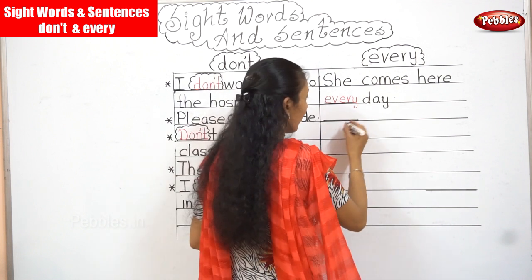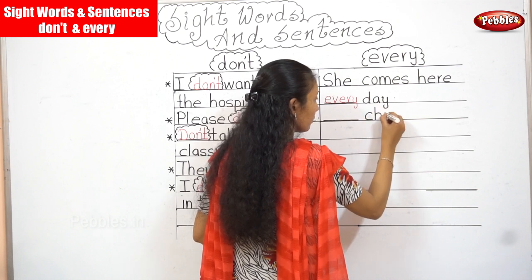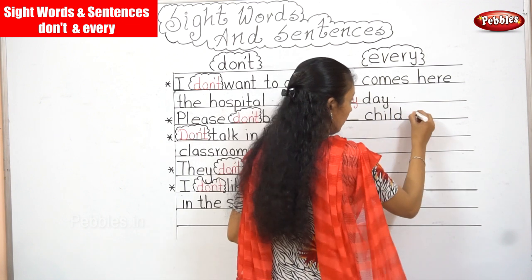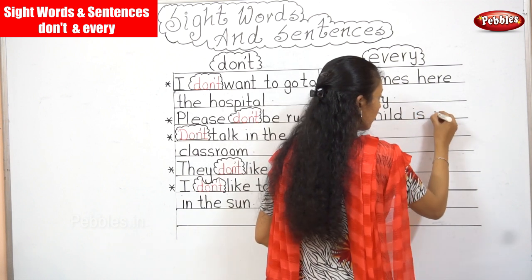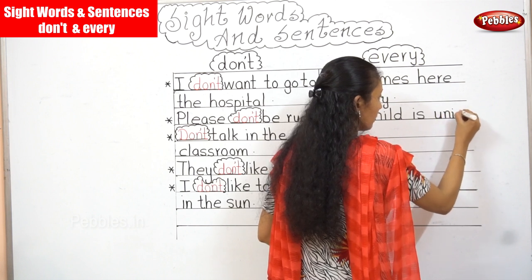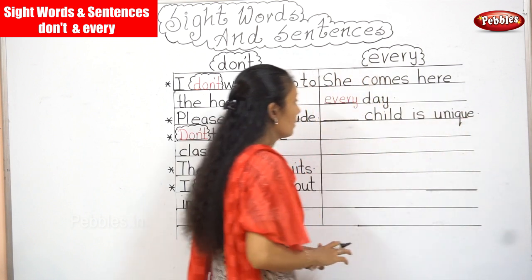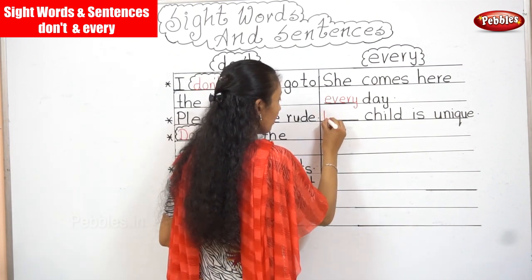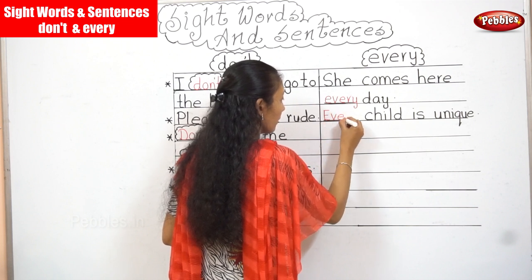Next one: — child is unique. The word is 'every'. Since I am starting your sentence with 'every', we will write it with a capital letter: Every child is unique.